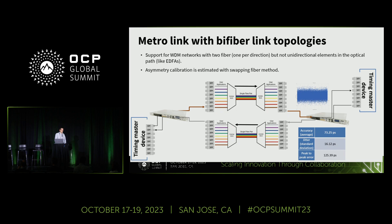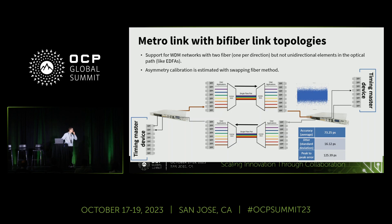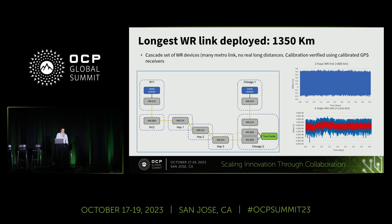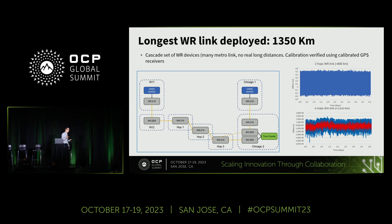We also work with regular telecom networks — not quantum-oriented — where there are many elements and multiplexing of different signals, making things more complicated. Depending on how those networks are engineered, we can still maintain sub-nanosecond accuracy. The longest White Rabbit link we have ever deployed connected New York City and Chicago, achieving an estimated noise of one-nanosecond RMS jitter for the entire link — better than any GPS solution and comparable to the most advanced timing technologies available.